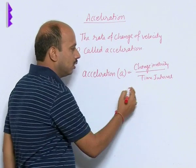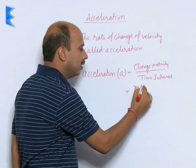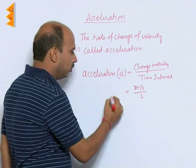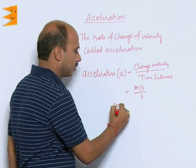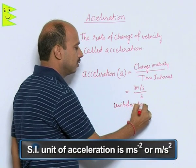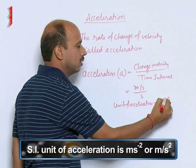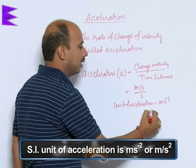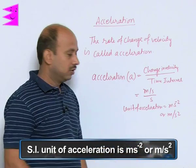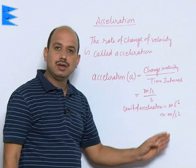We know change in velocity is measured in meter per second, and time interval is in seconds. So the unit of acceleration is meter per second square. The SI unit of acceleration is meter per second square.